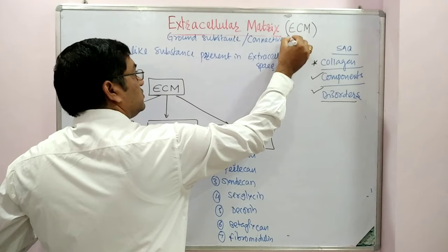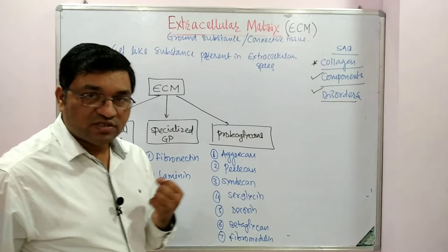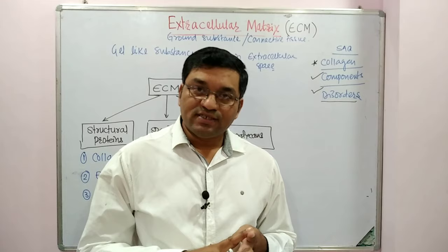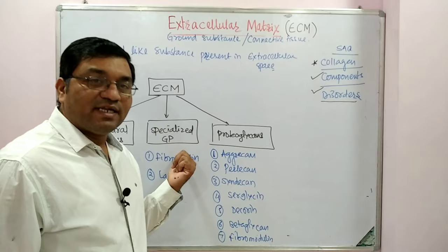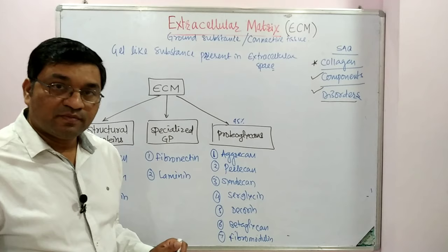What are the various components of extracellular matrix? It is divided into three types: structural proteins, specialized glycoproteins, and proteoglycans. The difference between glycoproteins and proteoglycans is that the carbohydrate content in glycoproteins is less, while in proteoglycans, carbohydrate content can extend up to 95% of total weight, and it is mainly glycosaminoglycans.